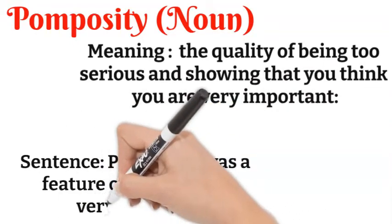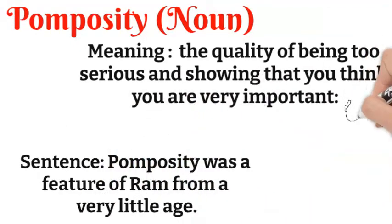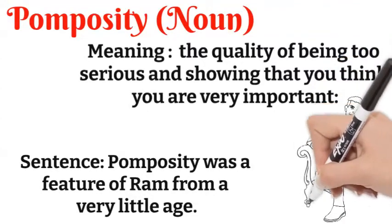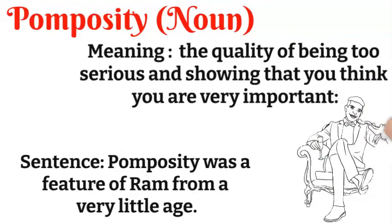Let's understand the sentence: From a very little age, pomposity was a feature of Ram. From a very little age, the self-importance of Ram is a very important trait from a very small age.